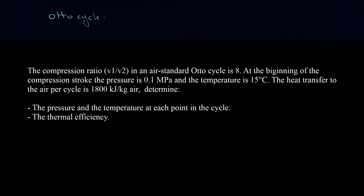Let us read the problem first. We have the compression ratio V1 over V2, and for an air-standard Otto cycle it is 8. At the beginning of the compression stroke, the pressure is 0.1 megapascal and the temperature is 15 degrees C. The heat transferred to the air per cycle is 1,800 kilojoules per kilogram of air — this is our Qin. We have to determine the pressure and temperature at each point in the cycle, and also the thermal efficiency of this Otto cycle.